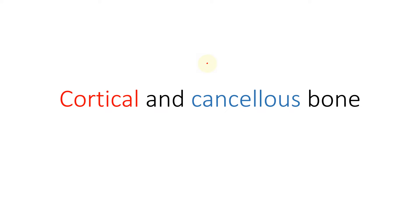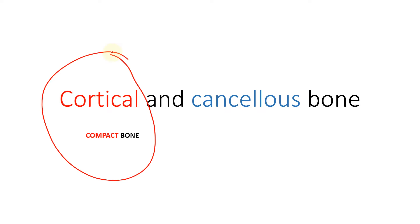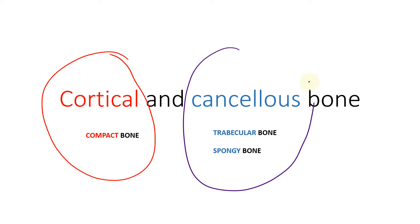In this video we will learn what is cortical bone and what is cancellous bone. Cortical bone is also called compact bone, so these two are one and the same. Cancellous bone is also called trabecular bone and spongy bone — trabecular because they have trabeculae, meaning thin plates of bone, and spongy because it looks like a sponge. These three names refer to the same structure.